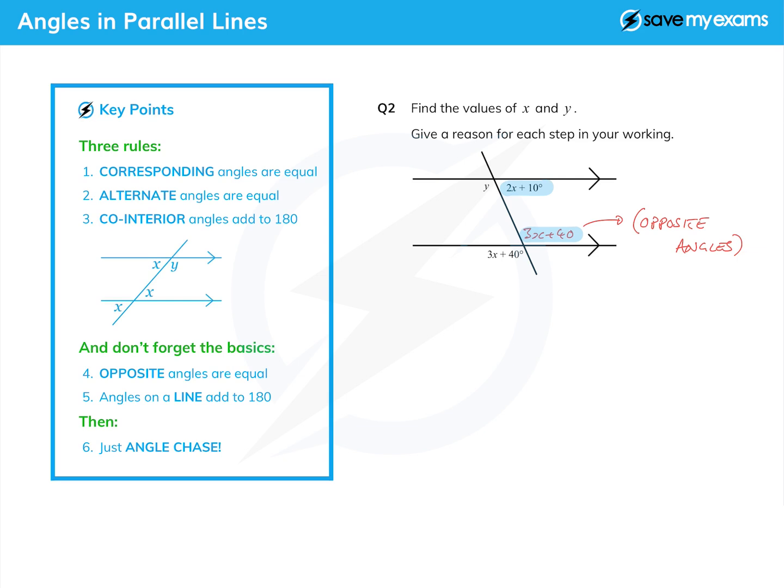So I'll write that down: 3x plus 40 plus 2x plus 10 equals 180. And again the reason is co-interior angles add up to 180. Actually, 'co-interior angles' is fine, and I've shown they add up to 180 by putting the equals 180 on it.